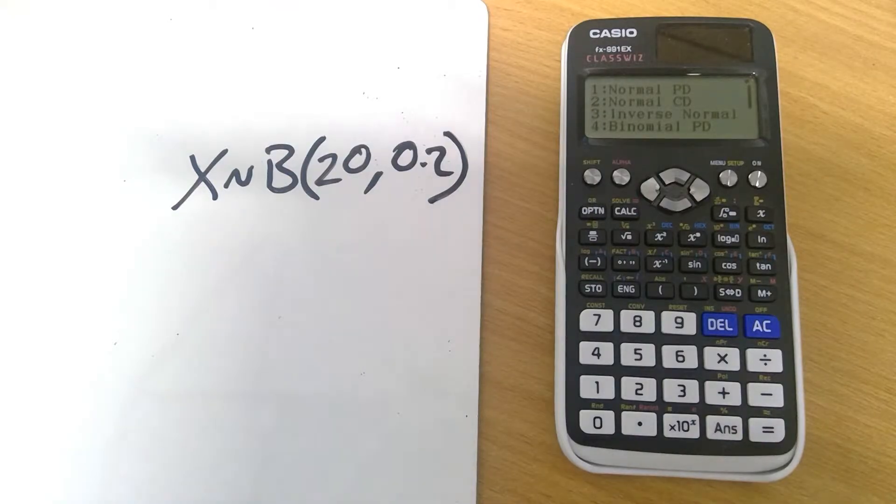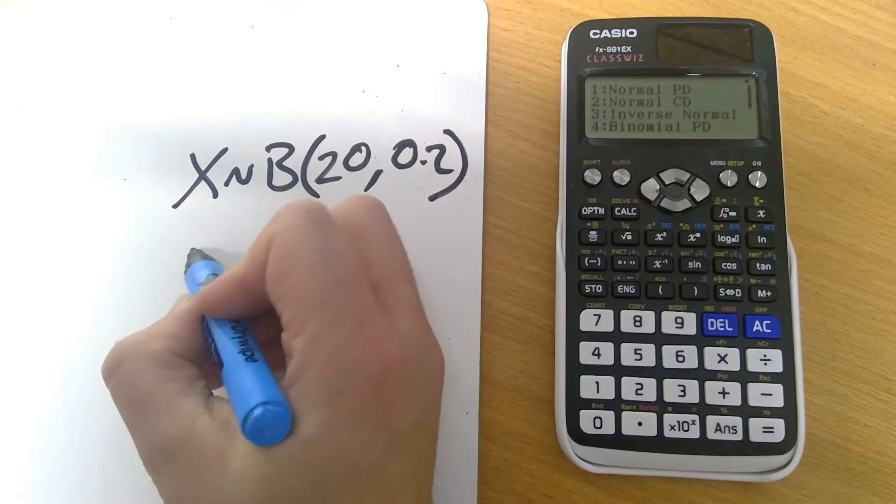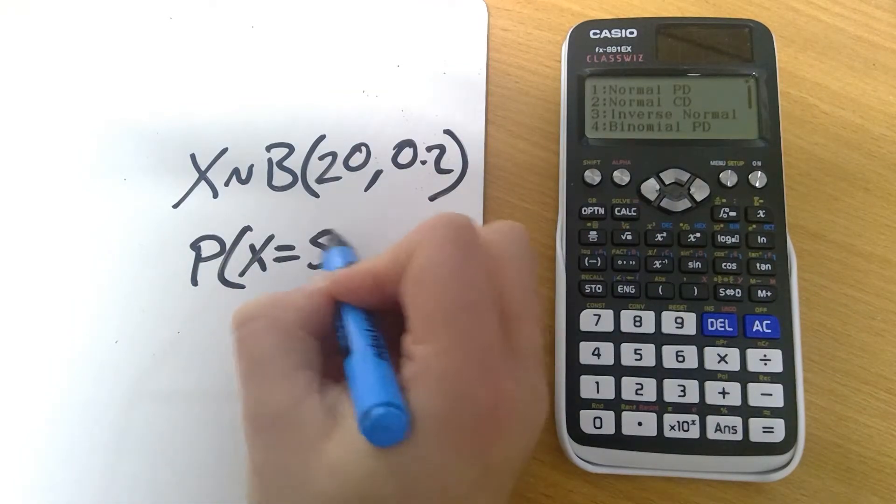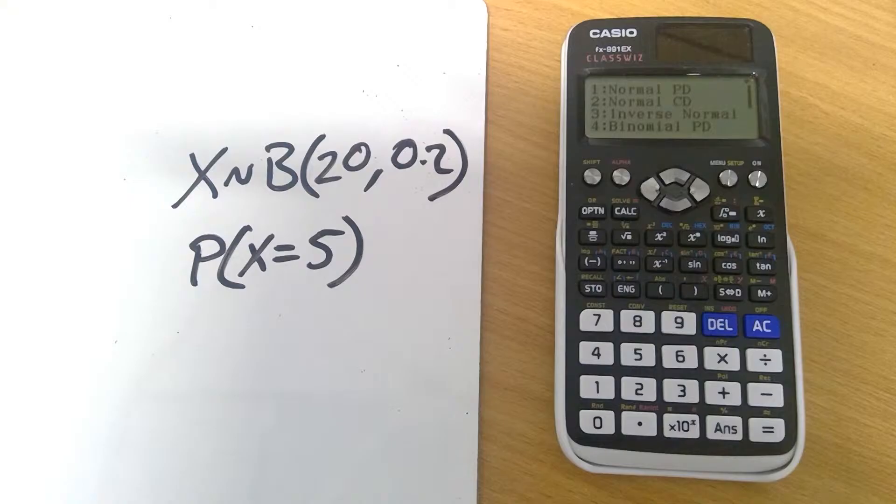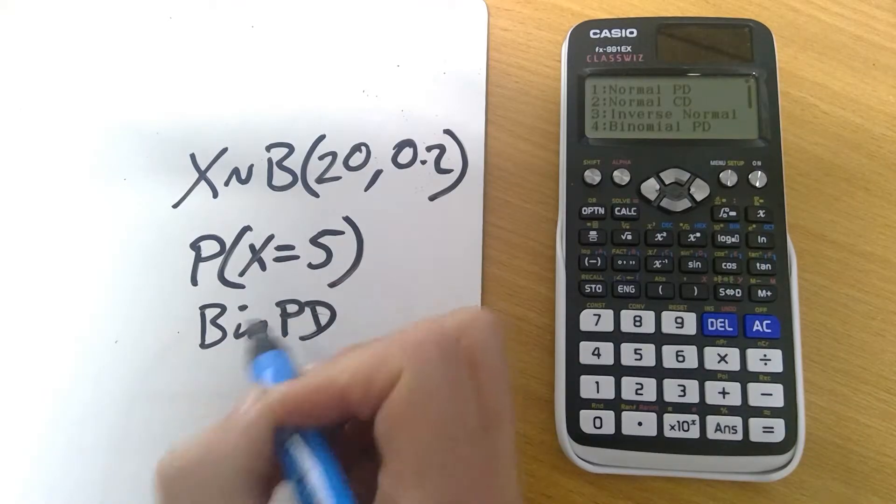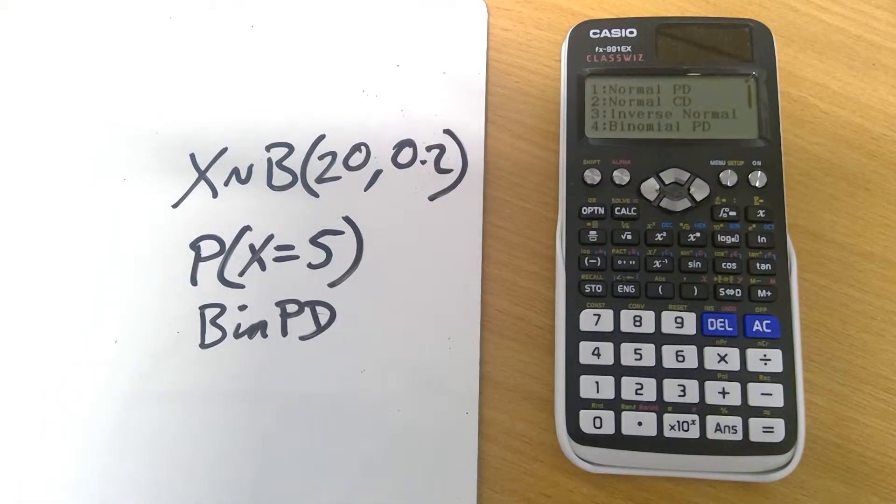We're going to first of all work on individual values. So we're going to look at the probability of X equaling 5. Let's do that one. We want binomial PD for this, binomial probability distribution, not cumulative distribution. That's the one we want. It's number 4 on this menu.